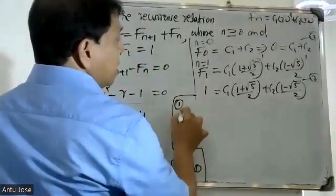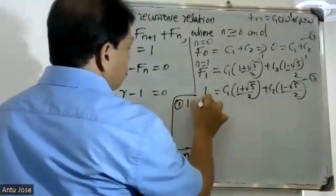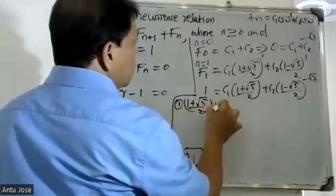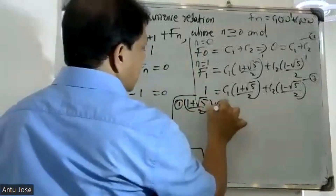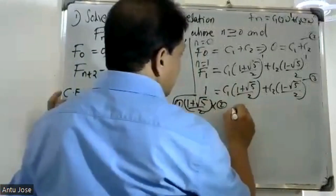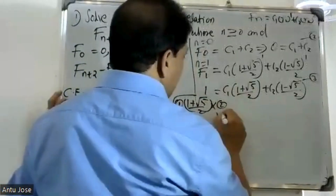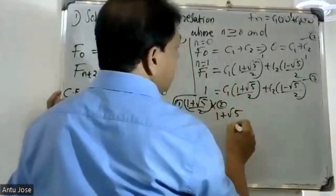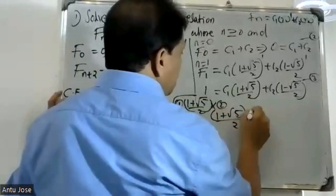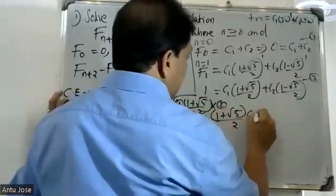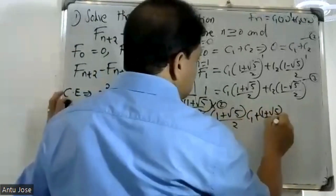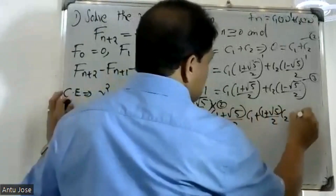So we get: C1 into one plus root five by two, plus C2 into one minus root five by two, equals one. And from the first condition: one plus root five by two, into C1, plus one plus root five by two equals zero.